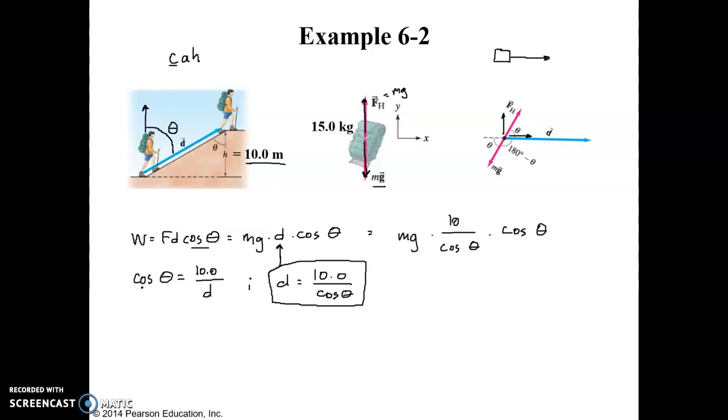So using right triangle trigonometry, we said that cosine of theta is the adjacent side over the hypotenuse, which is 10 over d. If we solve this equation for d, we get d is equal to 10 over cosine of theta.